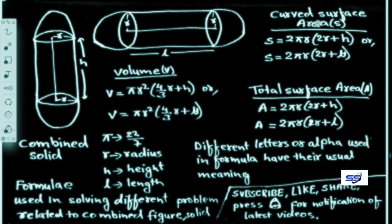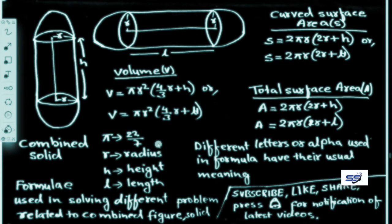Curved surface area for the double-hemisphere figure: S = 2πR(2R + H). In this formula, π = 22/7, R is radius, H is height, and L is length.